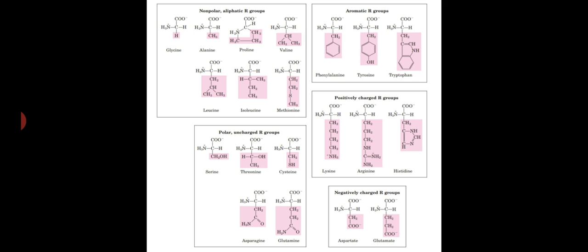Sulfhydryl groups of sulfur-containing amino acids, that is cysteine and methionine, form disulfide bonds. Disulfide bonds play important roles in the structure of many proteins by forming covalent links between parts of the protein molecule or between two different polypeptide chains.